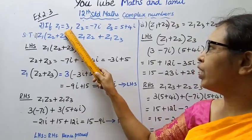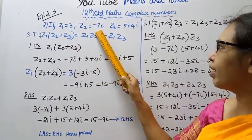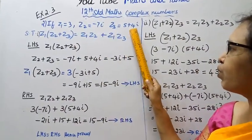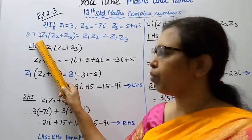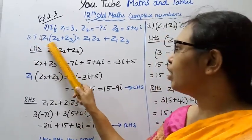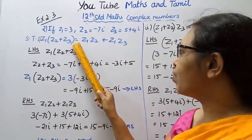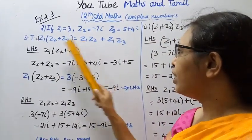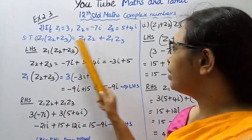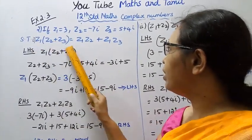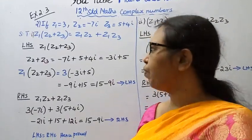If Z1 equal to 3, Z2 equal to minus 7i, Z3 equal to 5 plus 4i. Show that first subdivision: Z1 bracket Z2 plus Z3 equal to Z1 Z2 plus Z1 Z3. It is a distributive property.